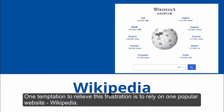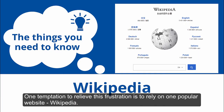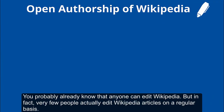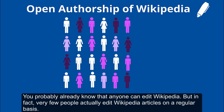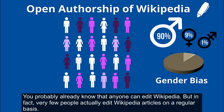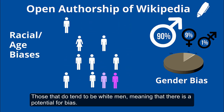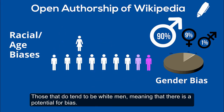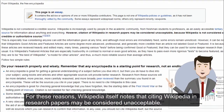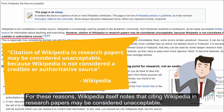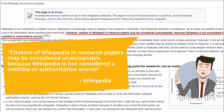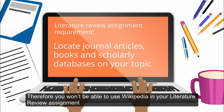This combined with the overwhelming number of results can make doing academic research on Google very frustrating. One temptation to relieve this frustration is to rely on one popular website, Wikipedia. You probably already know that anyone can edit Wikipedia, but in fact very few people actually edit Wikipedia articles on a regular basis. Those that do tend to be white men, meaning that there is a potential for bias. For these reasons Wikipedia itself notes that citing Wikipedia in research papers may be considered unacceptable.